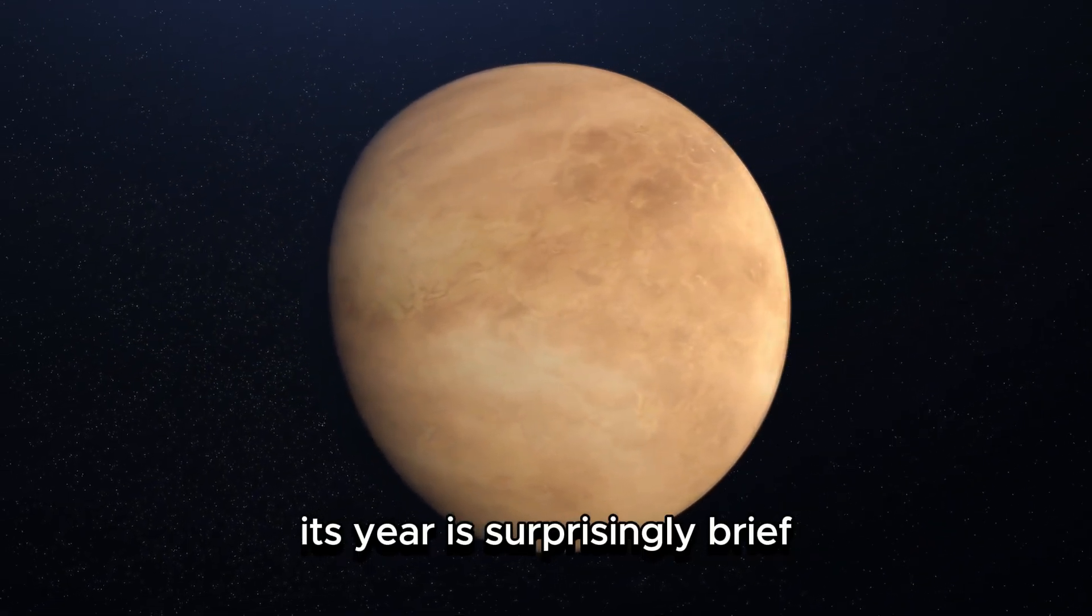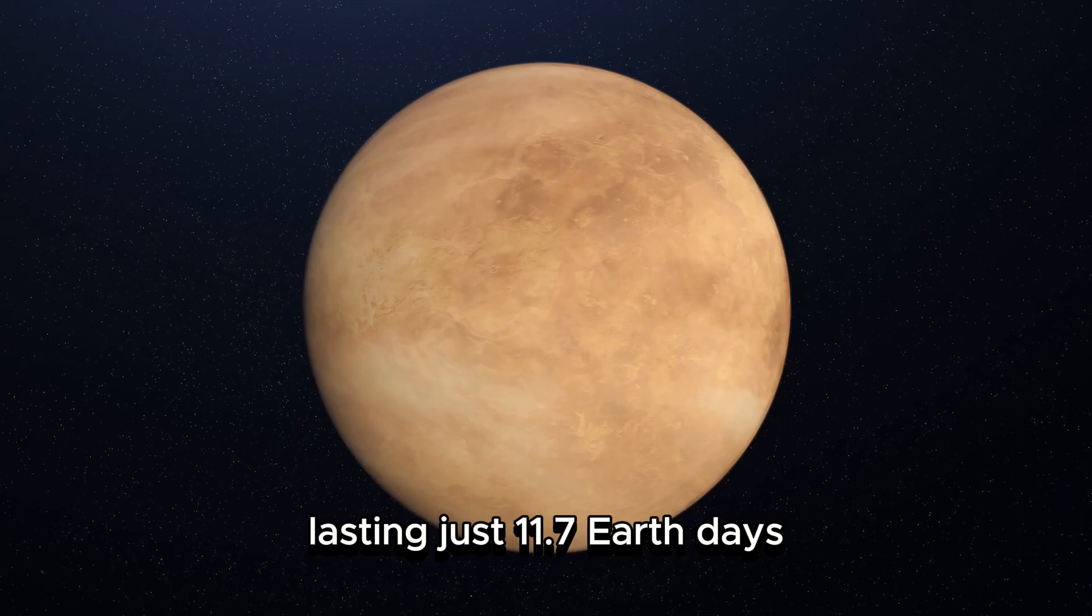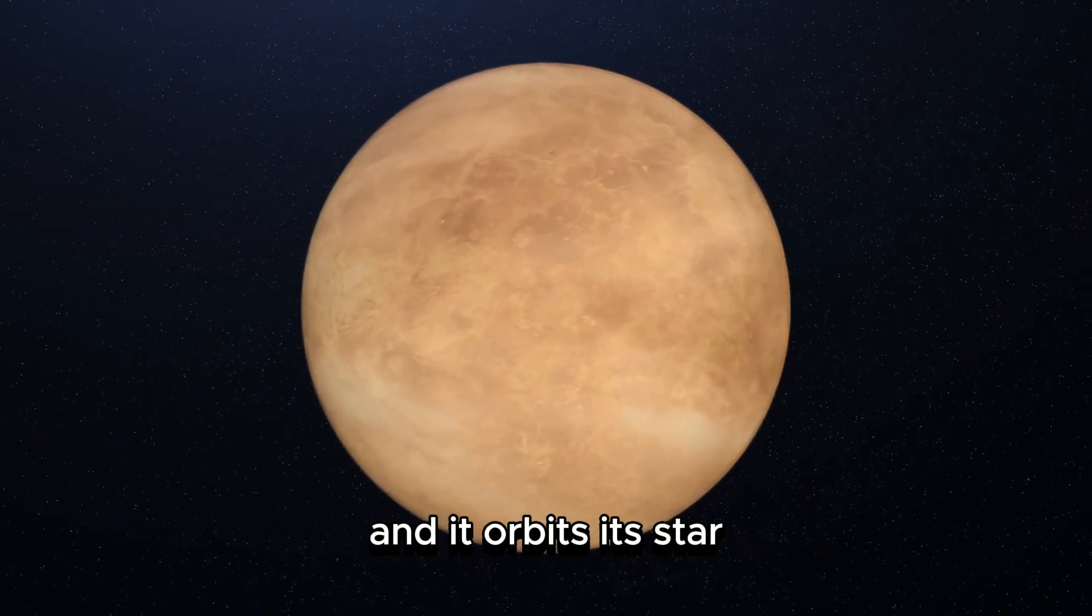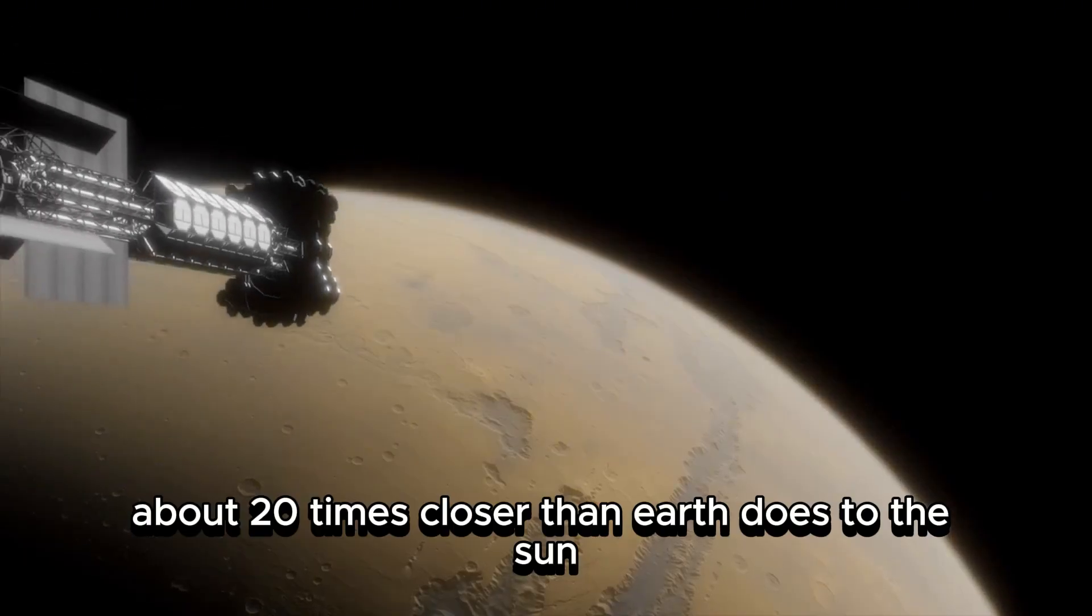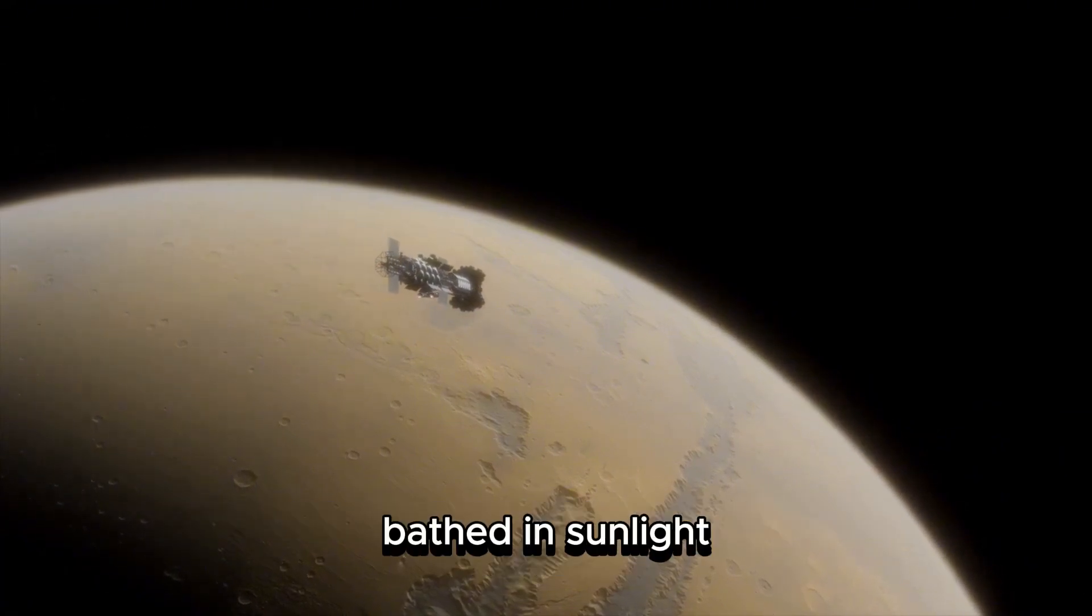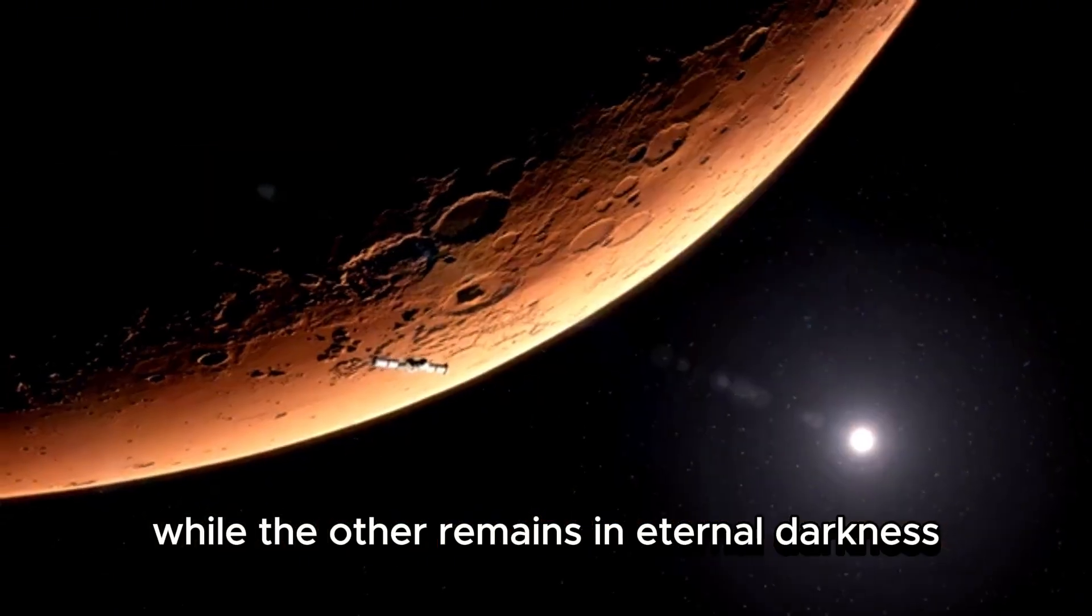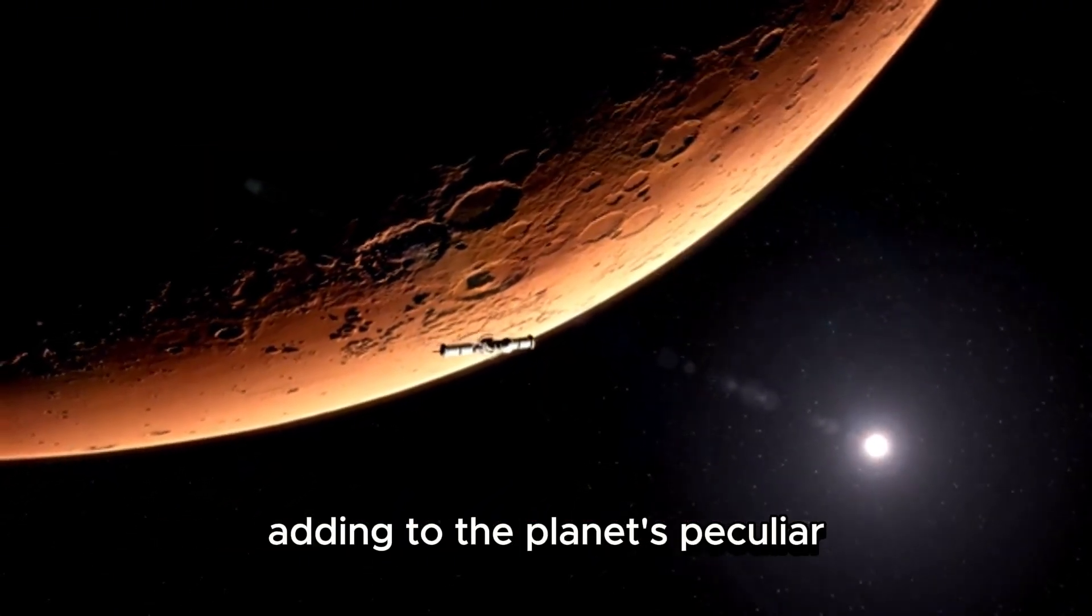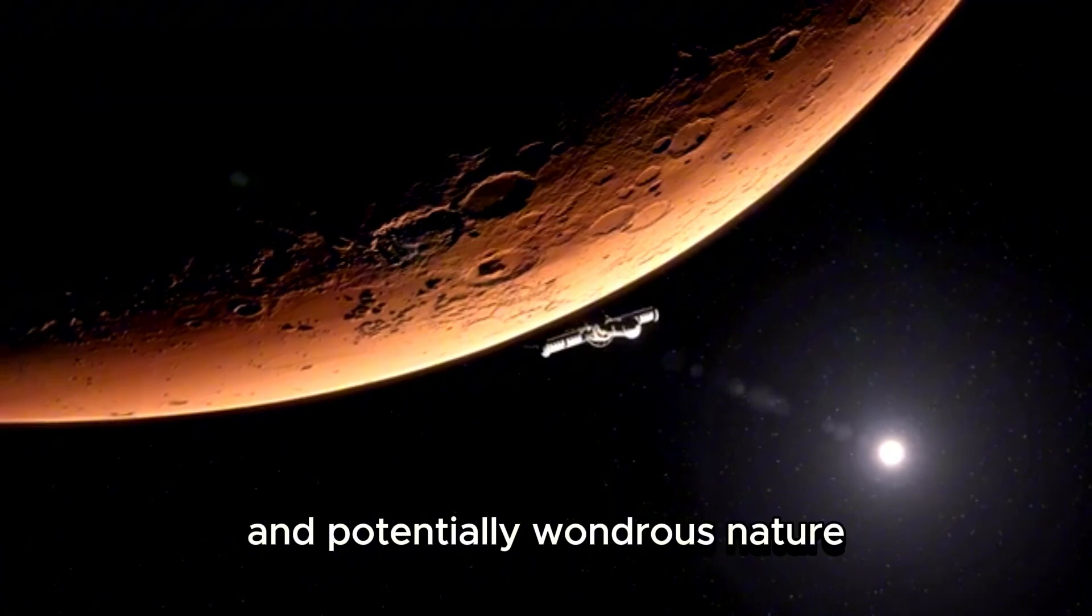Its year is surprisingly brief, lasting just 11.7 Earth days, and it orbits its star about 20 times closer than Earth does to the Sun. Consequently, one side of the planet is perpetually bathed in sunlight, while the other remains in eternal darkness, adding to the planet's peculiar and potentially wondrous nature.